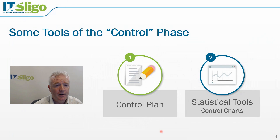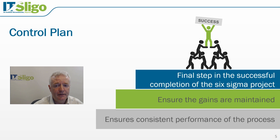In the control phase, a control plan will be developed that identifies how the process will be controlled in the future. This is typically by means of a control chart, and statistical tools are used to develop the control chart. The control plan is the final step in the successful completion of a Six Sigma project, and it ensures that the gains made as part of the project are maintained.